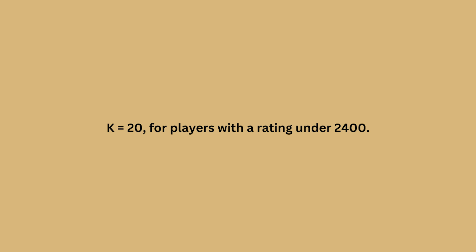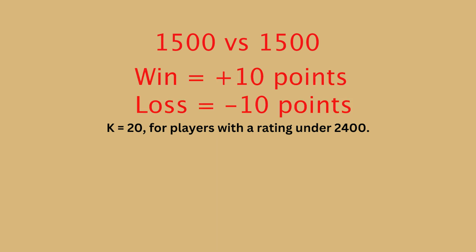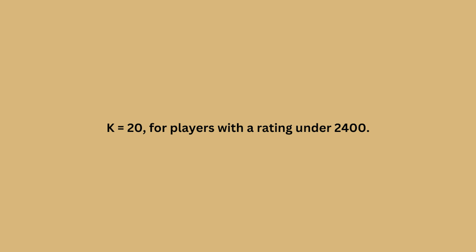Now you might think, what is the point of all these K factors? What is the significance of 40, 20, and 10? To give you an idea — let's say my rating is 1500, and if I play a player of the same 1500 rating and I defeat that player, then as my K factor is 20, I will get 10 points. If I lose to a very low rated player, I will lose 20 points. And if I defeat a very high rated player, I will get 20 points.